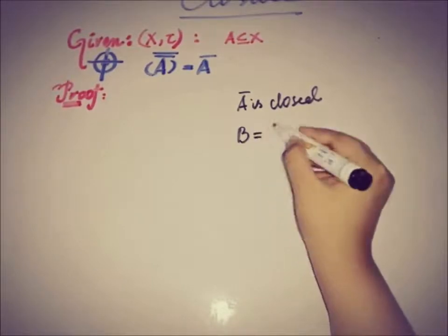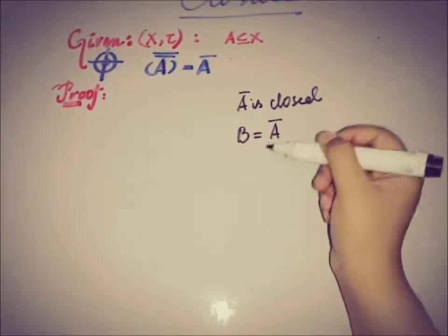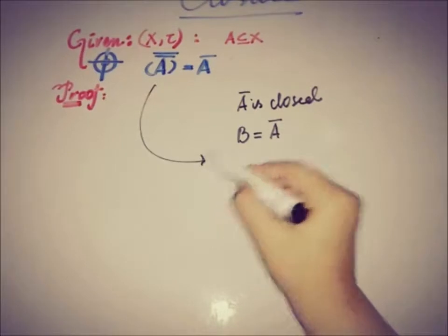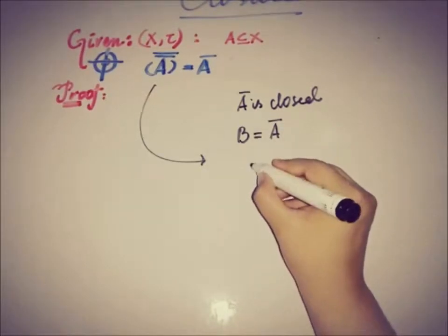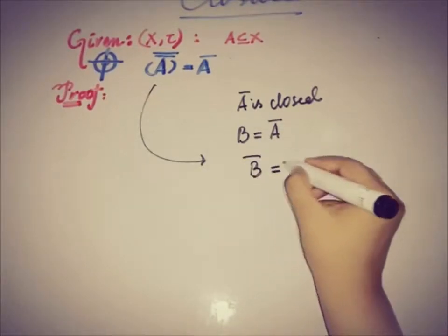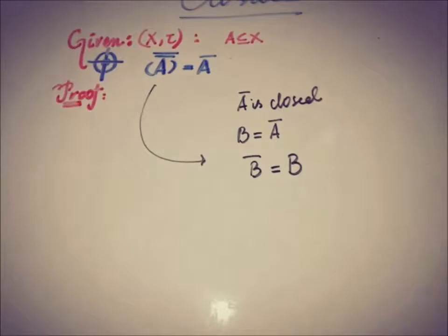That B is equal to A closure. Then we can write it as B closure is equal to B.